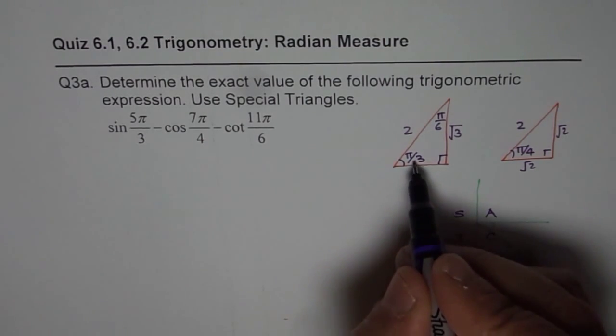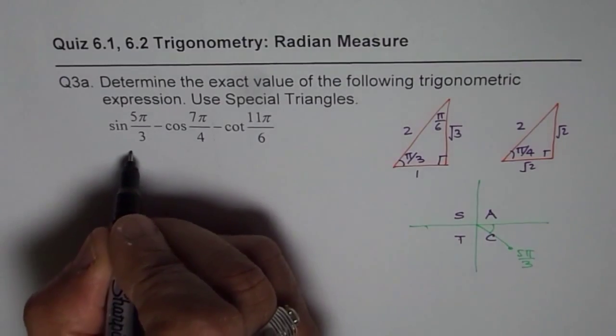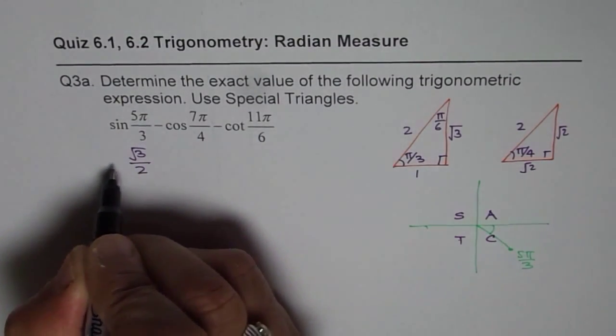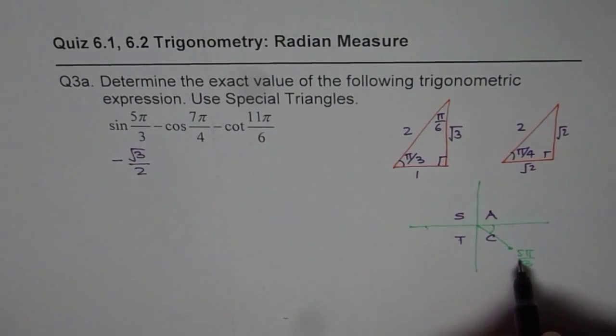So, we have to look into the π/3 triangle. Sine value will be opposite over hypotenuse. So, we get √3/2 with a negative sign. Negative because this happens to be in quadrant 4.